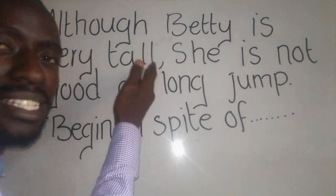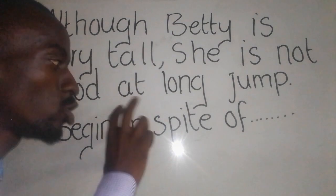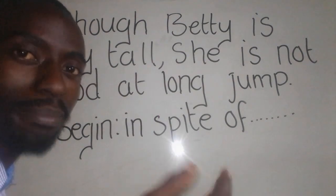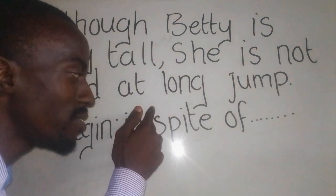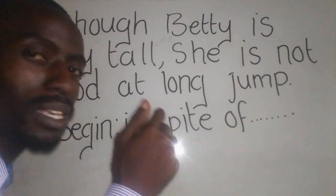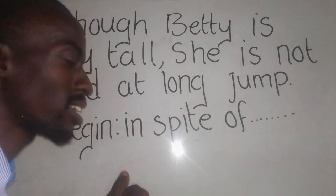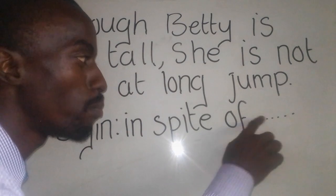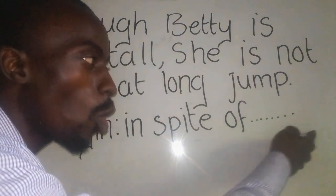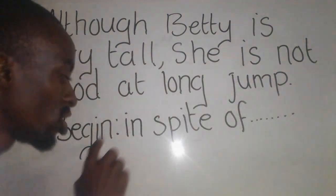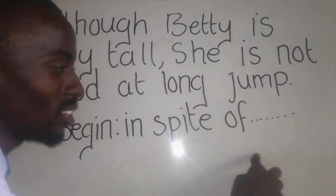If the tense is in the present, the rewrite should also be in the present tense. If it is in the past tense, the rewrite should be in the past tense. So the answer is: 'In spite of Beth being so tall, she is not good at the long jump.'